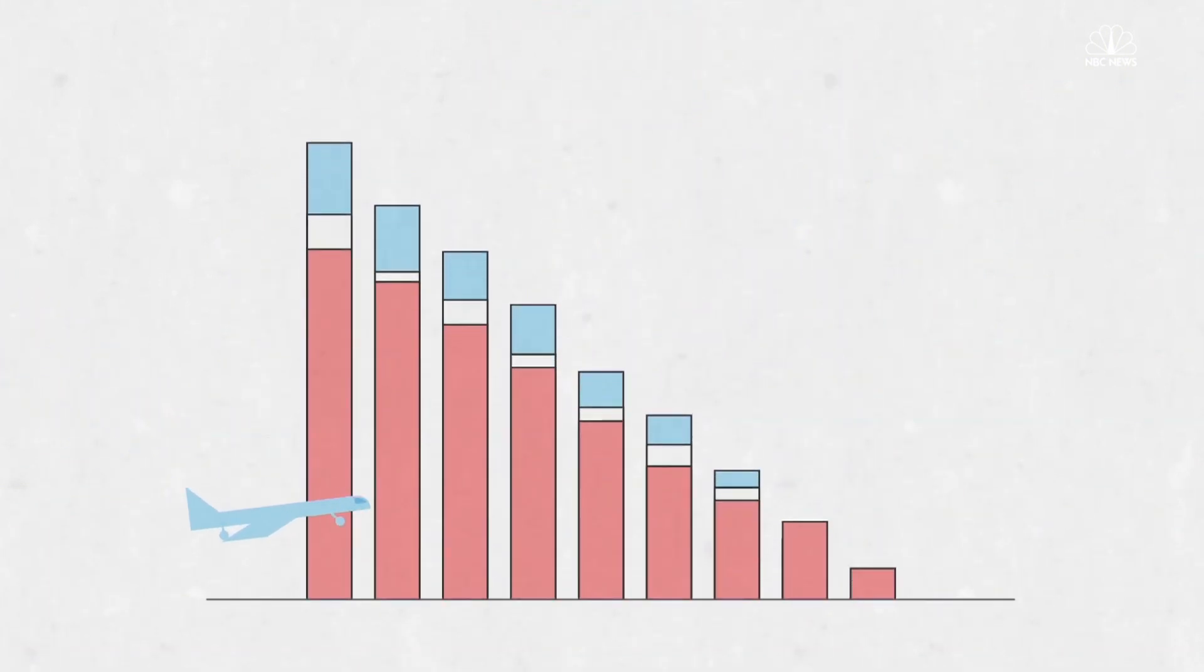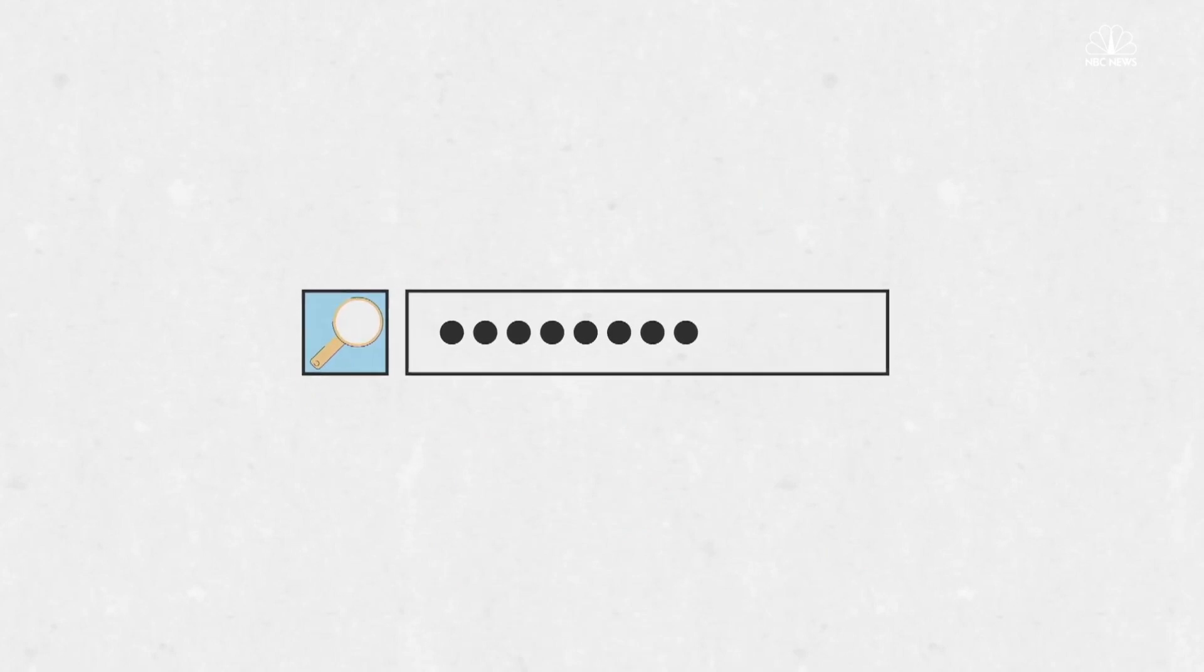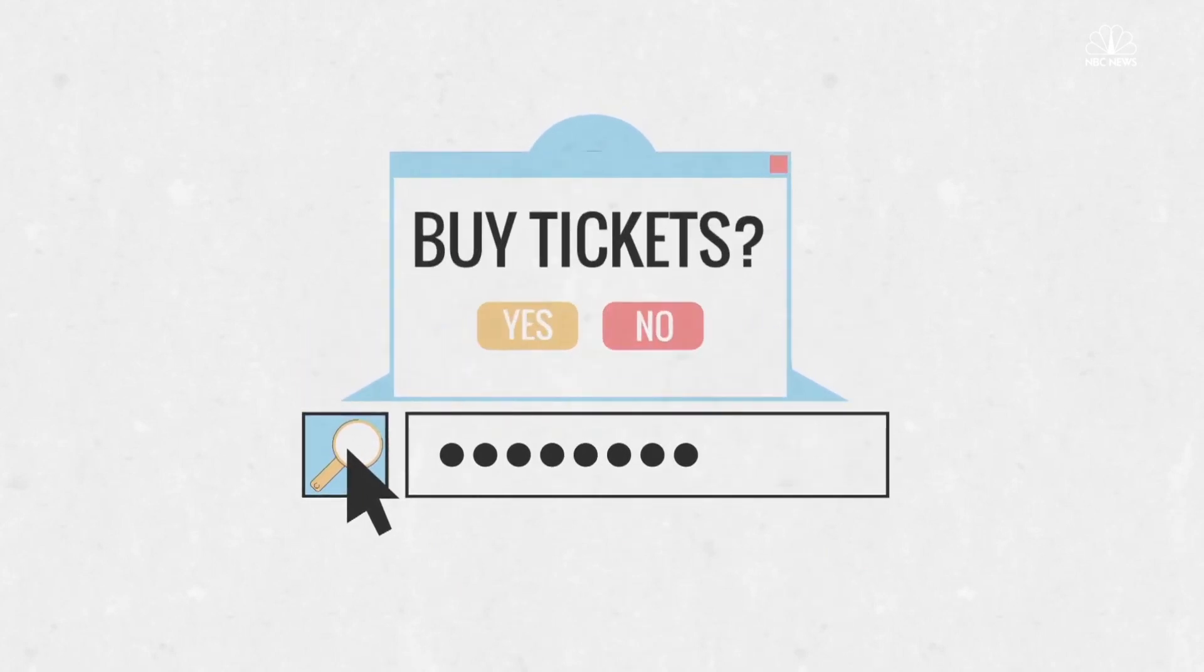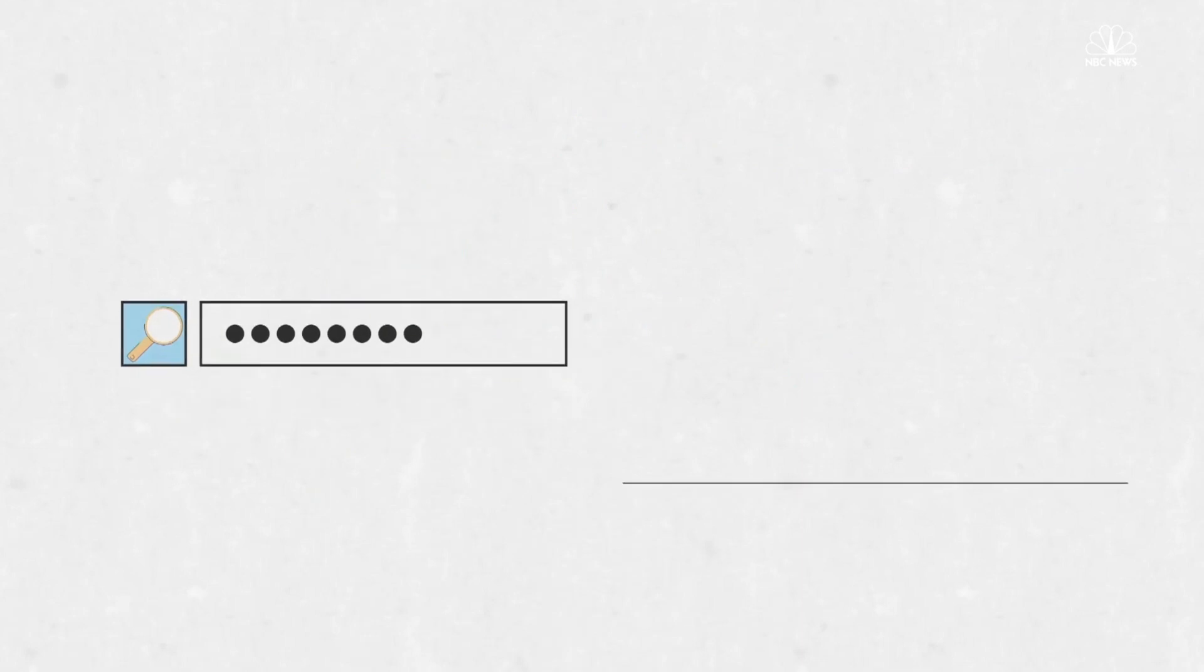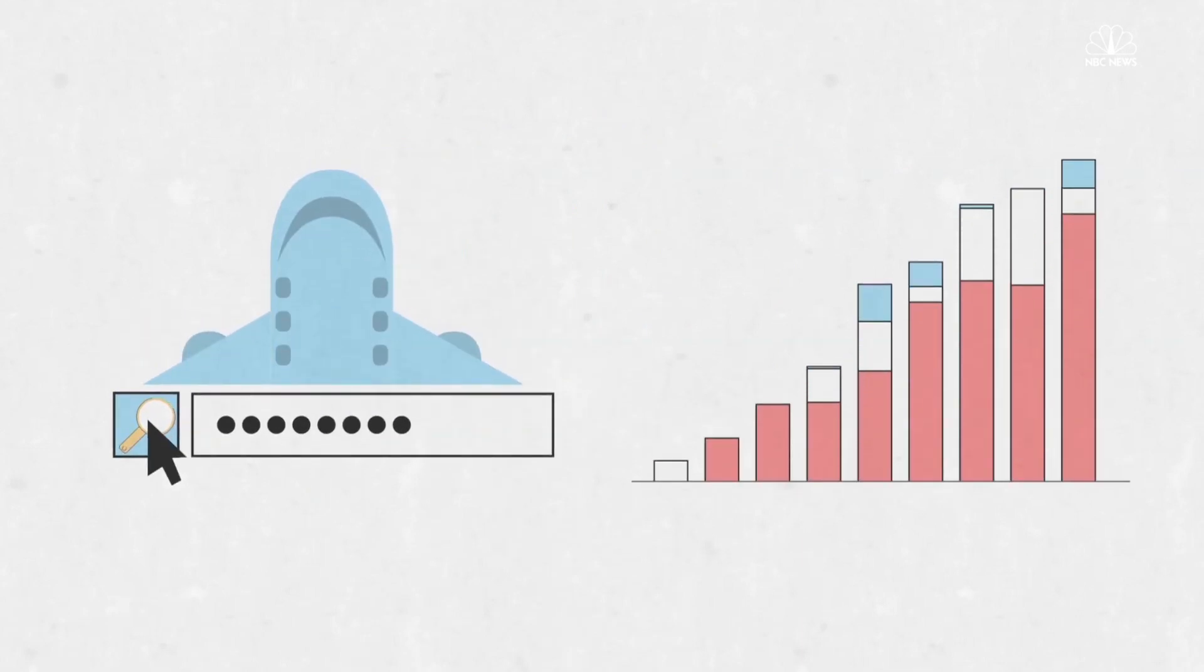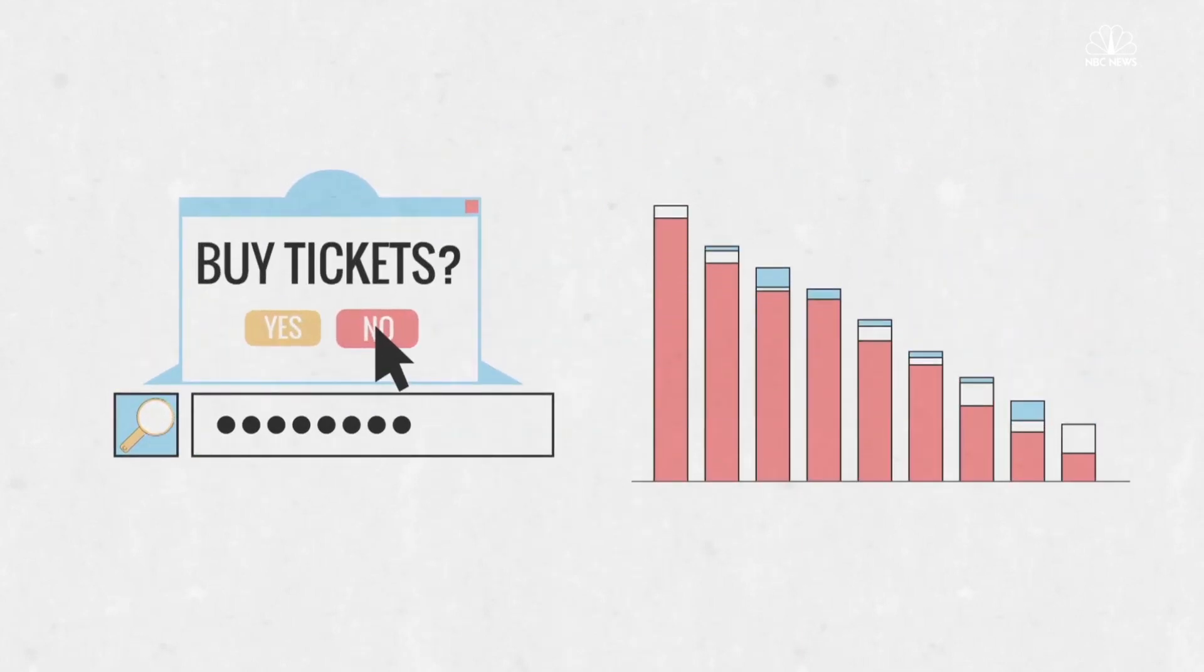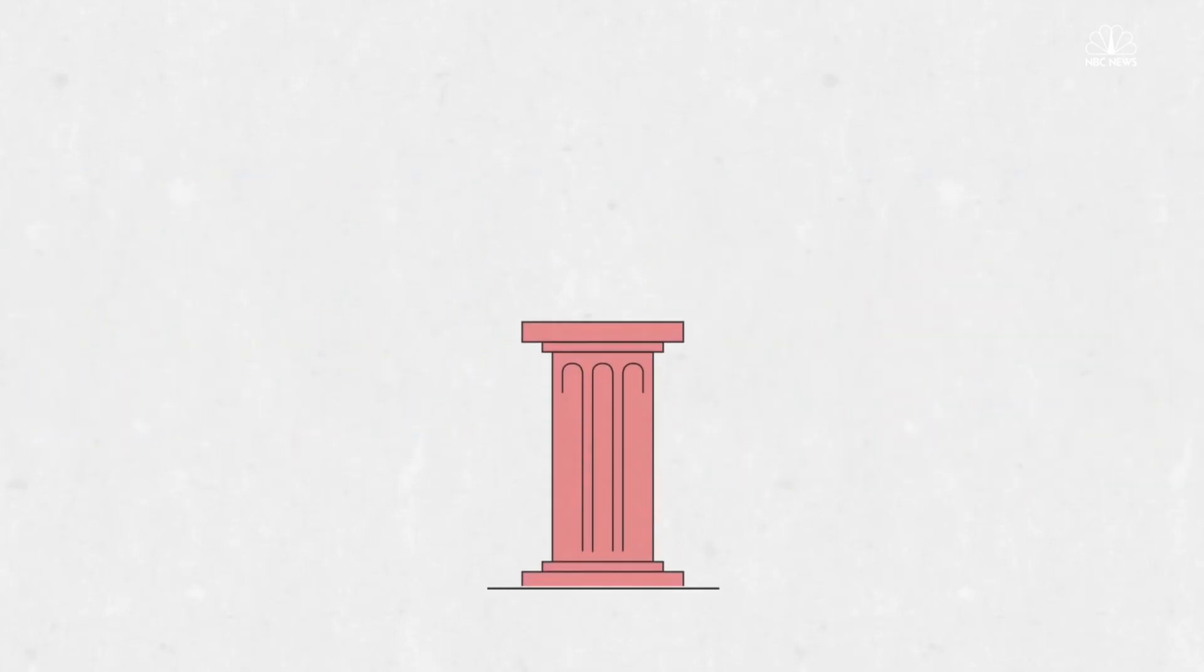But sometimes demand can weaken as a flight's date approaches, and prices for the remaining seats will drop. So if lots of people search for the same flight route in a certain time period but don't ultimately buy tickets, prices could surge based on predicted demand and drop again when the purchases aren't actually made.